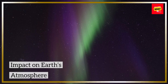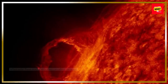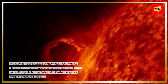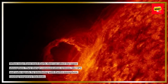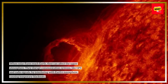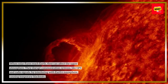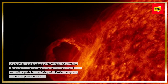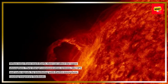Impact on Earth's atmosphere. When solar flares reach Earth, they can affect the upper atmosphere. They disrupt communication systems, like GPS and radio signals, by interfering with Earth's ionosphere, causing temporary blackouts.